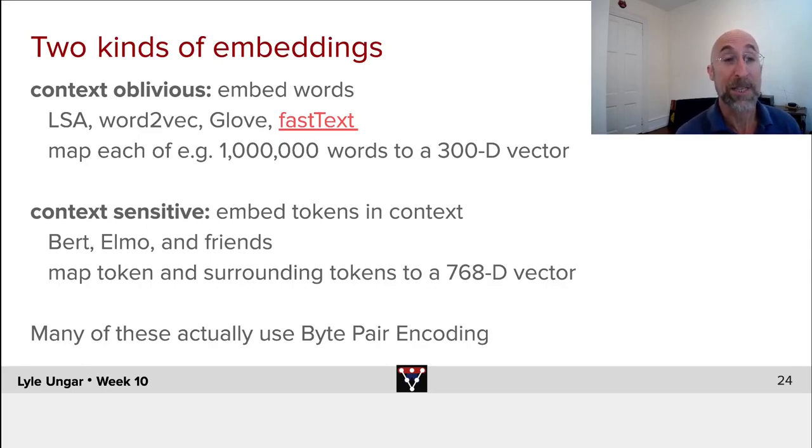Increasingly, people often use context-sensitive embeddings. They embed each token or each byte pair to an embedding, map that token and all the surrounding tokens in a big area, dozens, hundreds of words at either side to a, well, typically 768-dimensional vector. And then either of these can be put as inputs into our deep learning models.